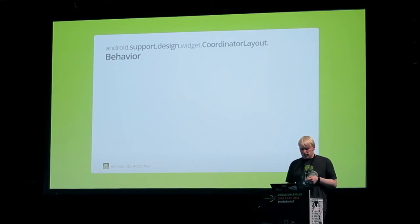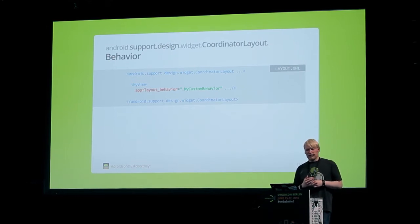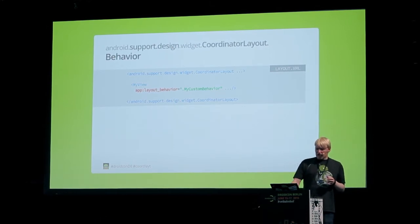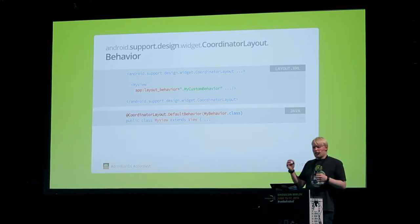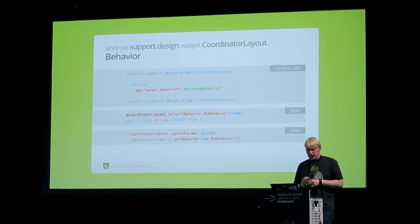There are three ways to apply a behavior to child views. First, simply in the layout XML — there's a layout parameter provided by CoordinatorLayout where you just mention the class of your behavior and it will be instantiated and applied. Second, by annotation on the view itself — when you have a custom view and always want it to have a specific behavior, you can do it this way. Third, you can set it in code on the layout parameters. The behavior instance is always kept in the child view's layout parameters, so each child view can only have one behavior applied.